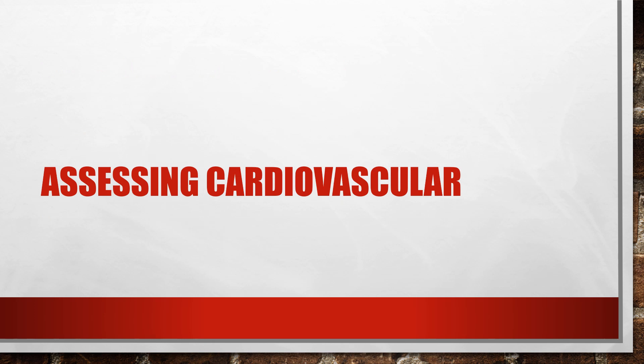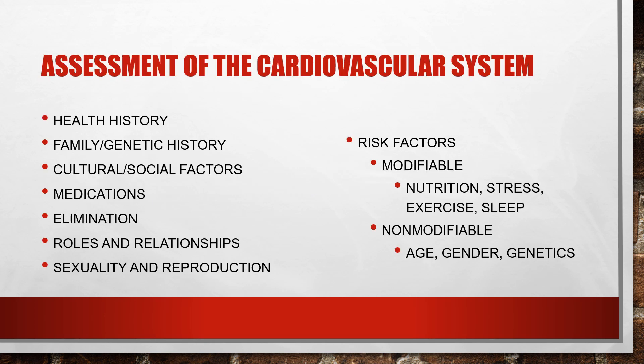Now we're going to discuss how we assess the cardiovascular system. Since it affects every body system, we may be assessing many systems and asking a lot of questions. First, we need a thorough health history including family and genetic history, as there are many genetic abnormalities that could affect our patient. We also need to ask about cultural and social factors such as diet, recreational tobacco and alcohol use, and their views about medical care, as these can all affect when a person seeks care for cardiovascular issues.